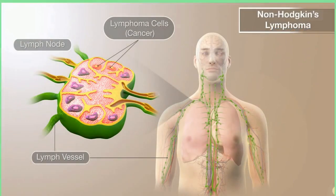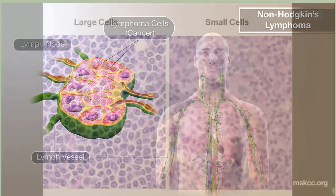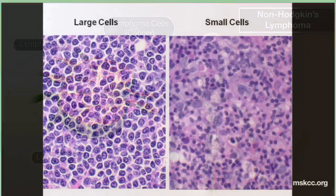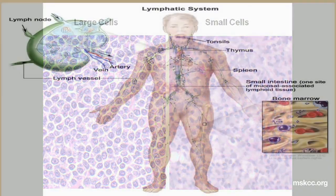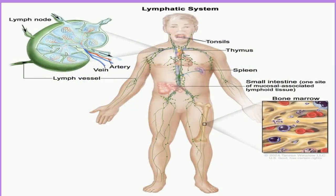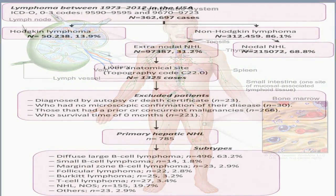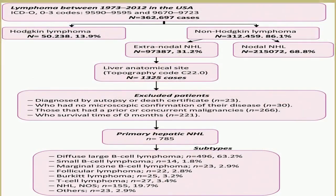Lymphoma occurs when the lymph node cells or the lymphocytes begin to multiply uncontrollably, producing cancerous cells that have the abnormal capacity to invade other tissues throughout the body. The two main types of lymphoma are Hodgkin lymphoma and non-Hodgkin lymphoma, which differ in certain unique characteristics of their respective lymphoma cells.